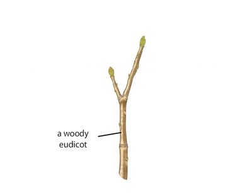Many plants grow thicker over time. This thickening process, which takes place in the roots and stems of a subset of eudicots, is referred to as secondary growth.